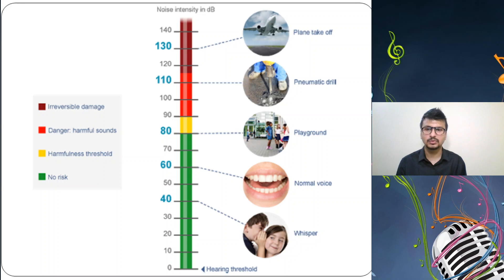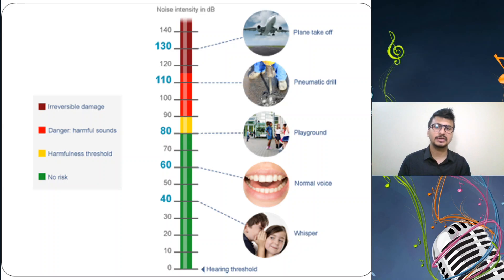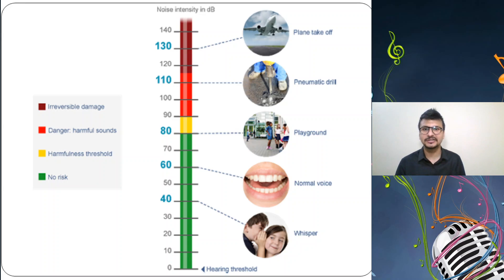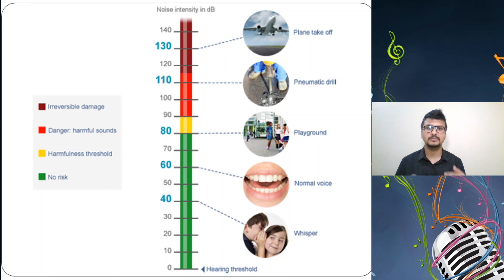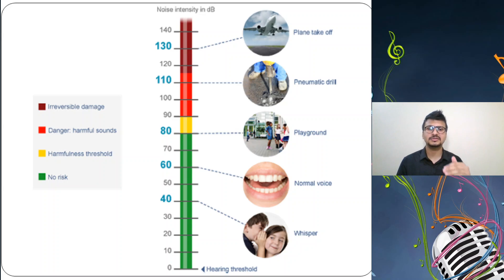The chart scales from 0 to 140 decibels. Zero is the hearing threshold. At 40 decibels is whispering — when you whisper in somebody's ear so the person nearby cannot hear. At 60 decibels is the normal voice level I'm using right now to interact with you. Up to 80 decibels is the no-risk zone — there is no problem when talking and listening in that range.